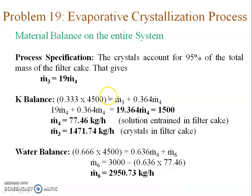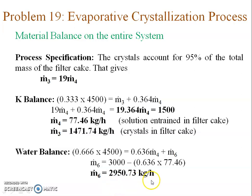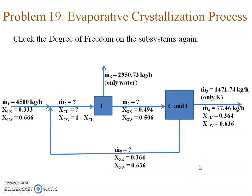Taking an overall balance on the complete system: using the process specification (m3 equals 19 times m4), then taking k balance and water balance with m3 replaced by 19 times m4, I calculate m4. From the known relation I also get m3. Substituting m4 into the water balance gives m6 — the amount of water evaporated in the evaporator. m3 is the crystal yield, and m4 equal to 77.46 is the entrained liquid flow rate. I then update the flowchart.